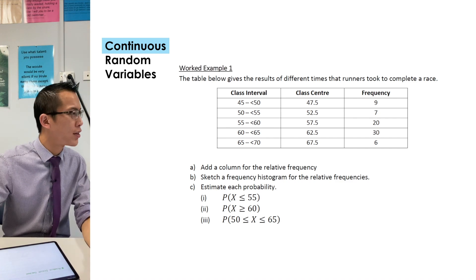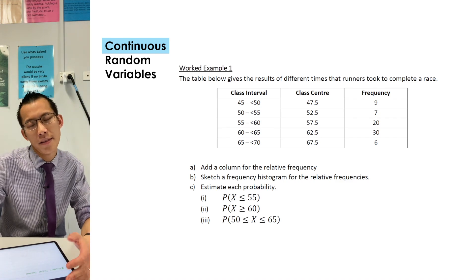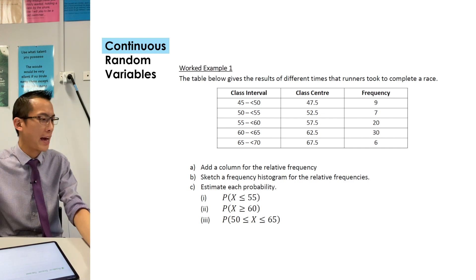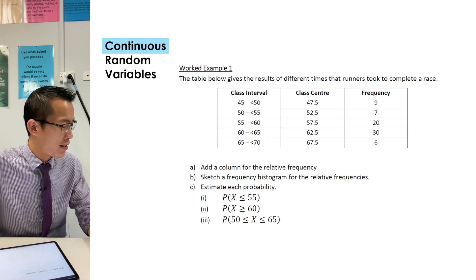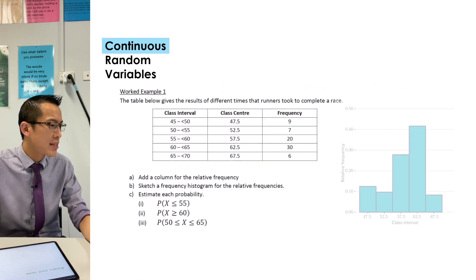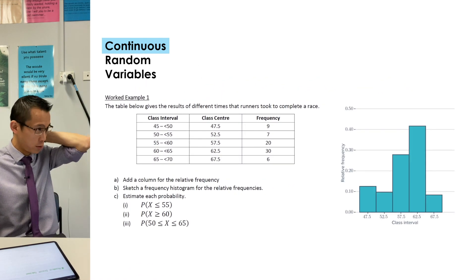So the relative frequency of the first class will be 9 out of 72, then 7 out of 72, 20 out of 72, you get the idea. Now to sketch that frequency histogram, I know it takes a while to draw charts, I didn't give you heaps of time, but this is basically what it's going to look like.